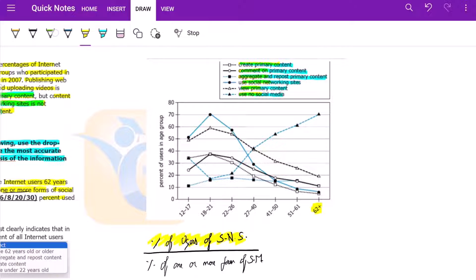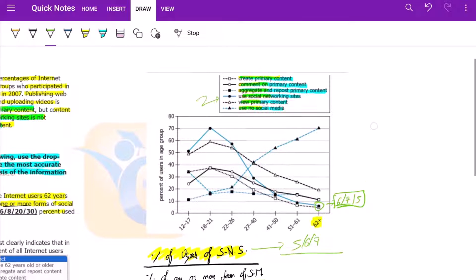So this is represented here by this legend. Here we have something around six or seven, maybe also five. It is not very clear, so this can be around five, six, or seven. Let us see. Percentage of users of social networking site of one or more form of social media. So how do we go about it?